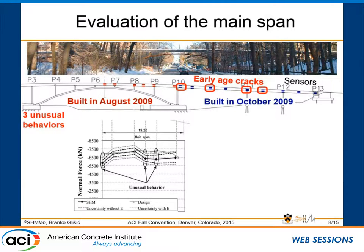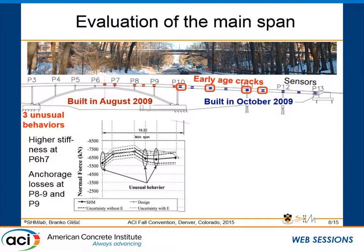We detected three unusual behaviors — three discrepancies between design and measurements. The first is in the middle of the bridge where we measure a lower value than design. The interpretation is actually higher stiffness in the middle, because we have very short columns there and it looks like the deck and part of the arch act together as a composite structure with higher stiffness than just the deck alone. This results in an apparent lower pre-stress force reading. The other two discrepancies are consequence of anchoring that happened when the bridge was built in two phases.